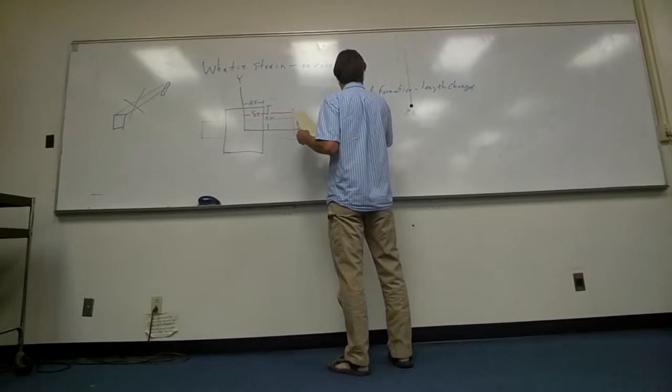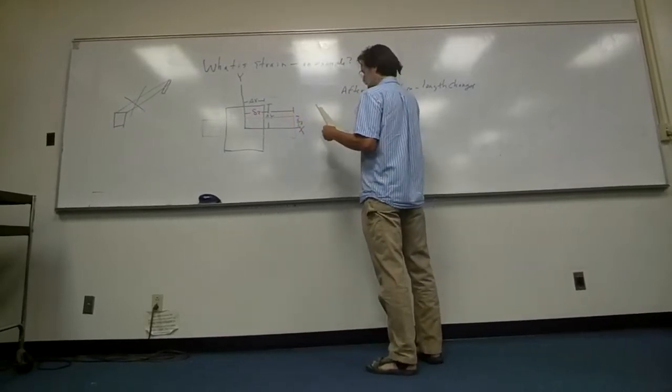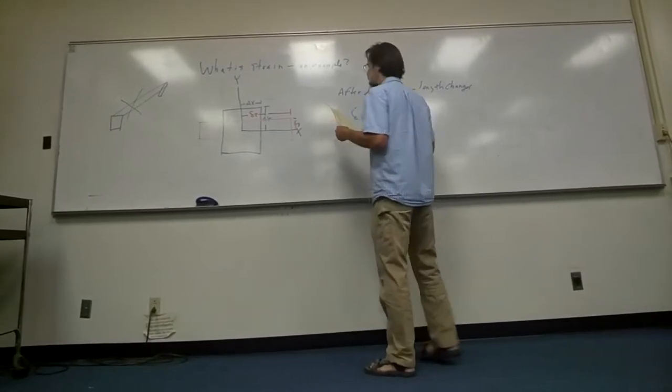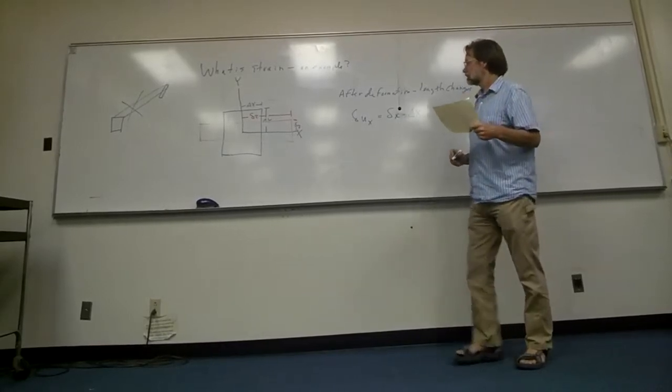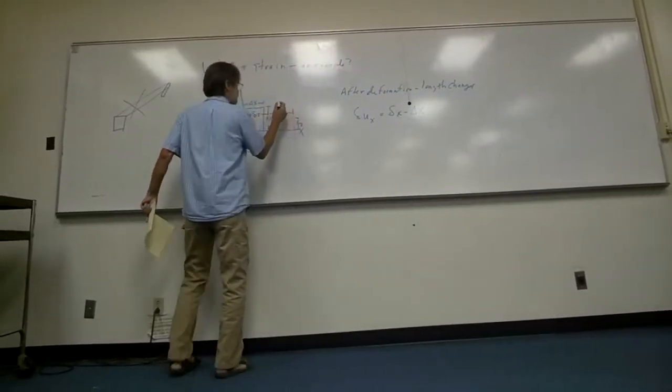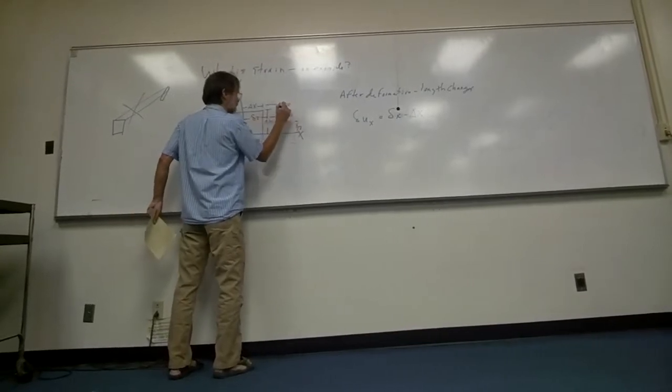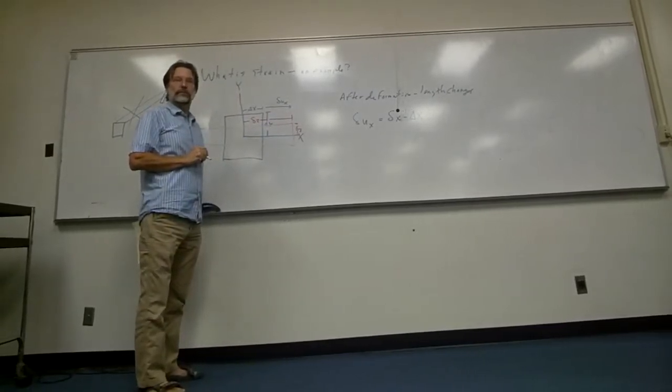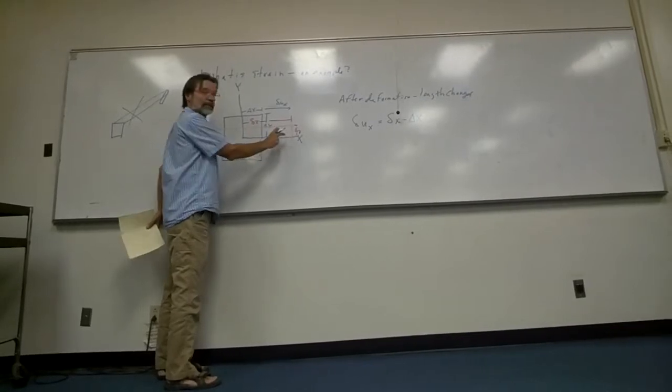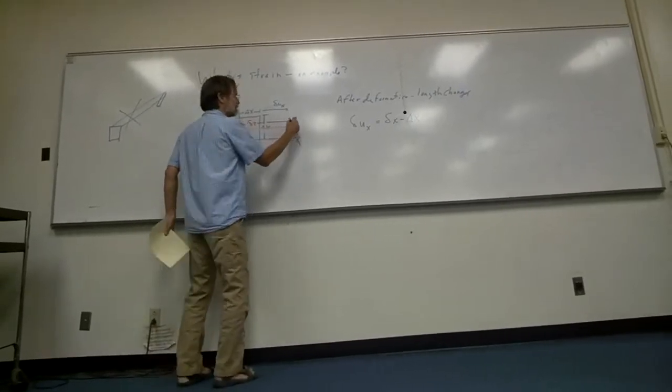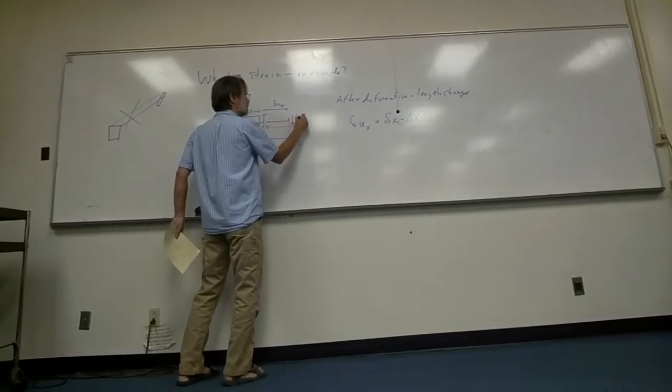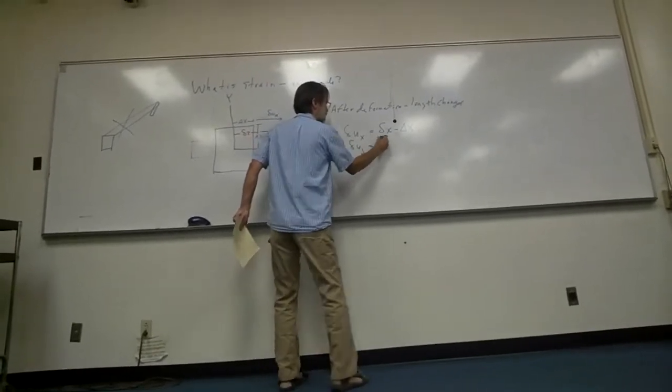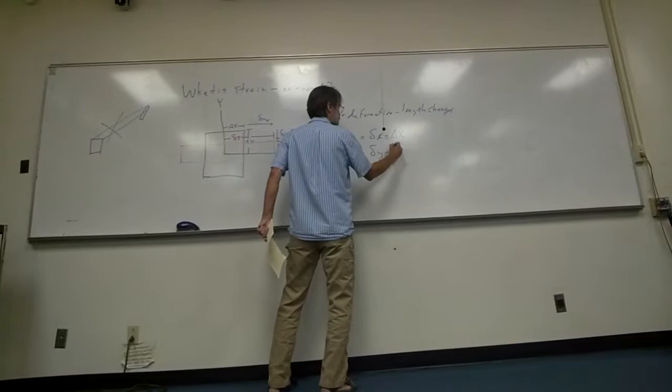So delta u in the x-direction equals little delta x minus big delta x. Or alternatively stated, if you think about that for a moment, that right there is little delta u in the x-direction, that's the displacement of this quantity in that x-direction. And similarly, there's another quantity here, little delta u y.